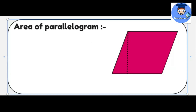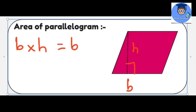Now we are going to find out the area of a parallelogram. For the area of a parallelogram, we will need the base and the height. I have drawn a perpendicular to get the height of the parallelogram. Let the height of the parallelogram be h and the base be b. The area of a parallelogram will be base multiplied by height, that is b times h. If base equals to 2 and height equals to 5, then the area of the parallelogram will be 10 meter square.